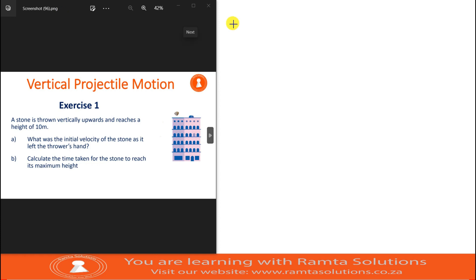So this height is basically a maximum height, which we will call delta y, which is 10 meters above the thrower's hand. Question a says what was the initial velocity of the stone as it left the thrower's hand? Before we do these calculations, we will take our upwards motion as positive.